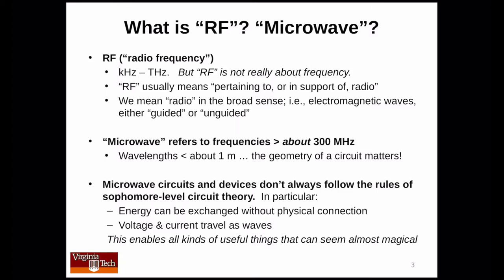The term microwave refers to frequencies greater than about 300 megahertz. A free-space wavelength at 300 megahertz is about one meter, which means that the dimensions of circuits and circuit boards become a significant fraction of the wavelength. As frequency goes up, wavelength decreases, so at higher frequencies a circuit board may be many wavelengths across. As a result, the geometry of the circuit matters. You can no longer assume, for example, that the voltage at one end of a printed circuit board trace is equal to the voltage at the other end, and you need to take that into account. If you're not prepared to do that, it becomes a serious impediment.